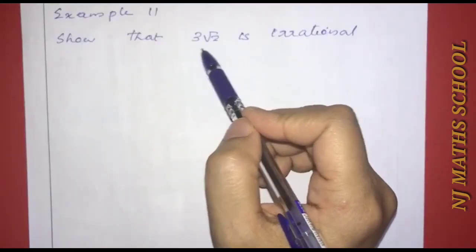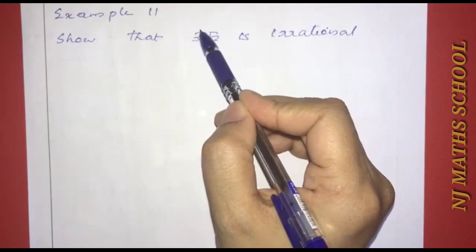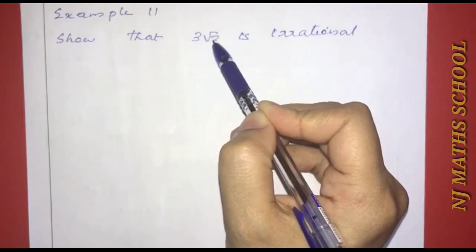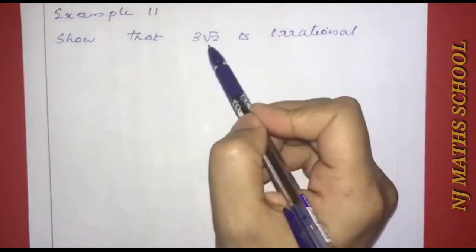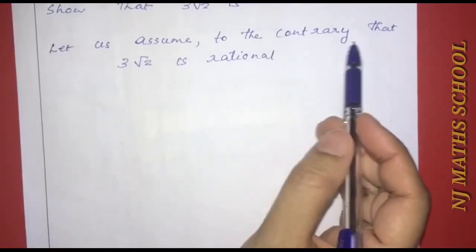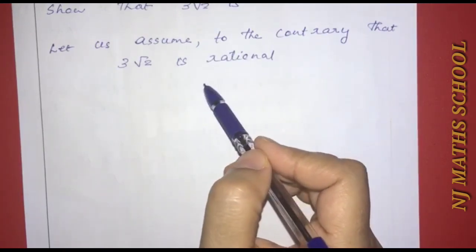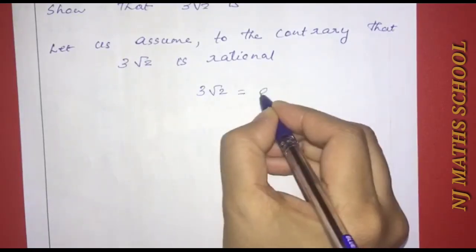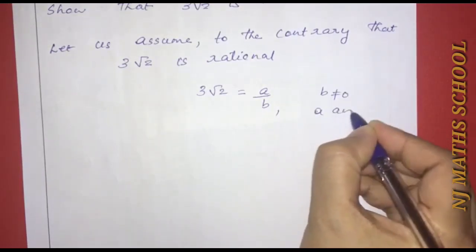Next example: show that 3 root 2 is irrational. We assume to the contrary that 3 root 2 is rational. So we can write 3 root 2 equals a by b, where b is not equal to zero and a and b are co-prime.